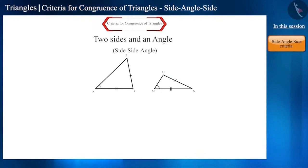By looking at the figure, we can tell that these two triangles are not congruent. Therefore, the SSA cannot be accepted as the test for the congruence of triangles.